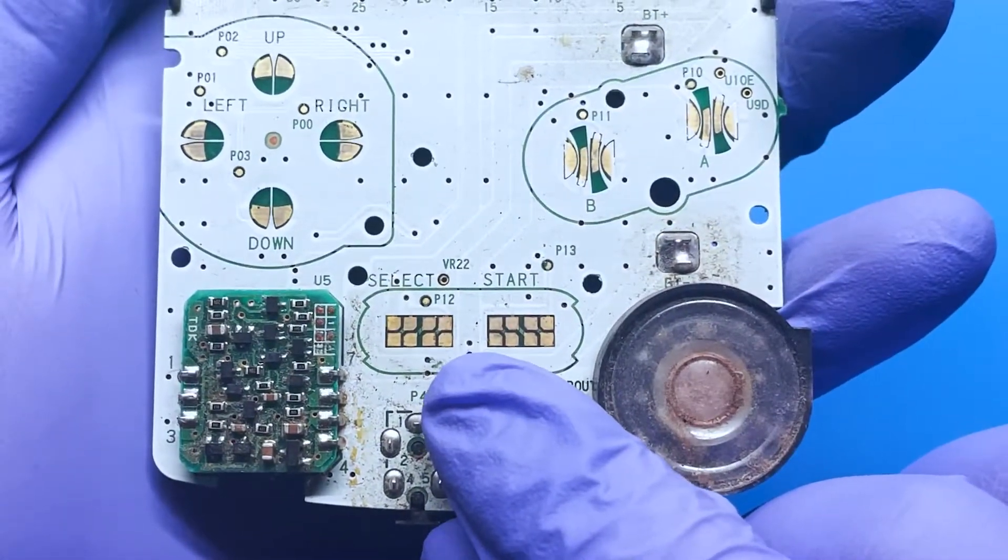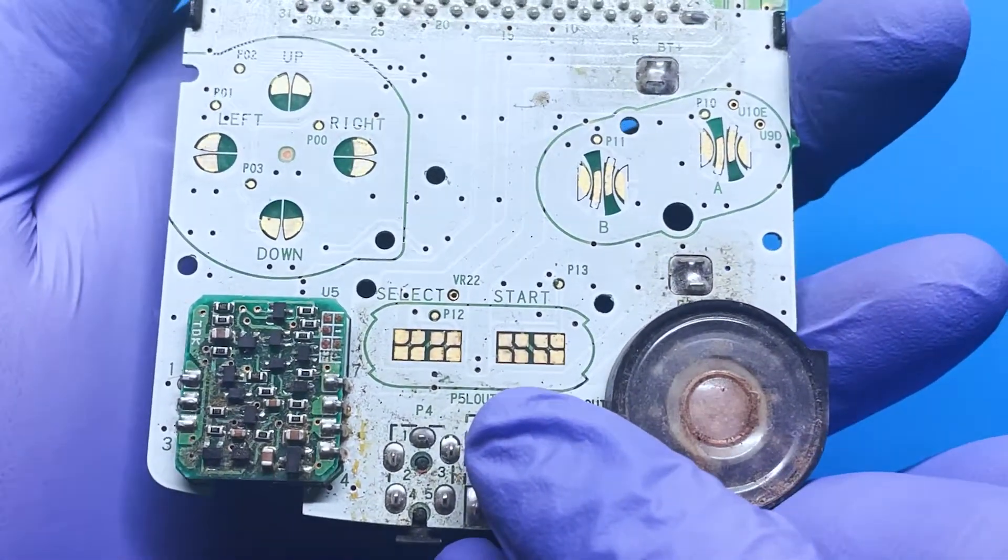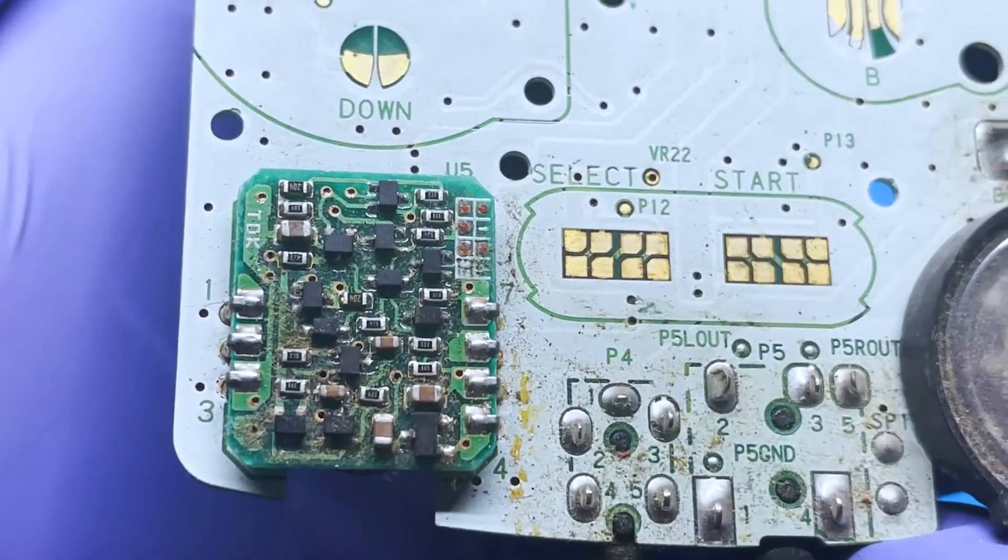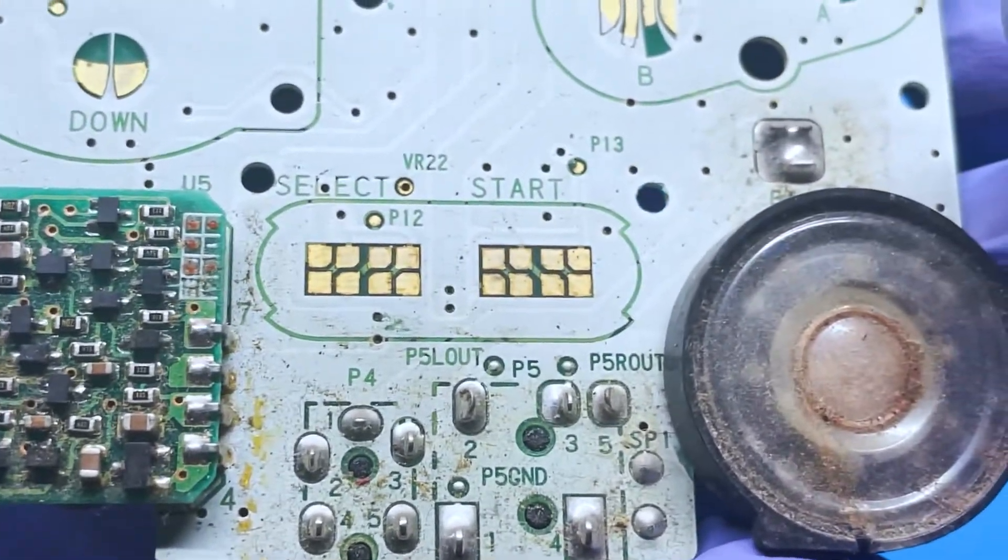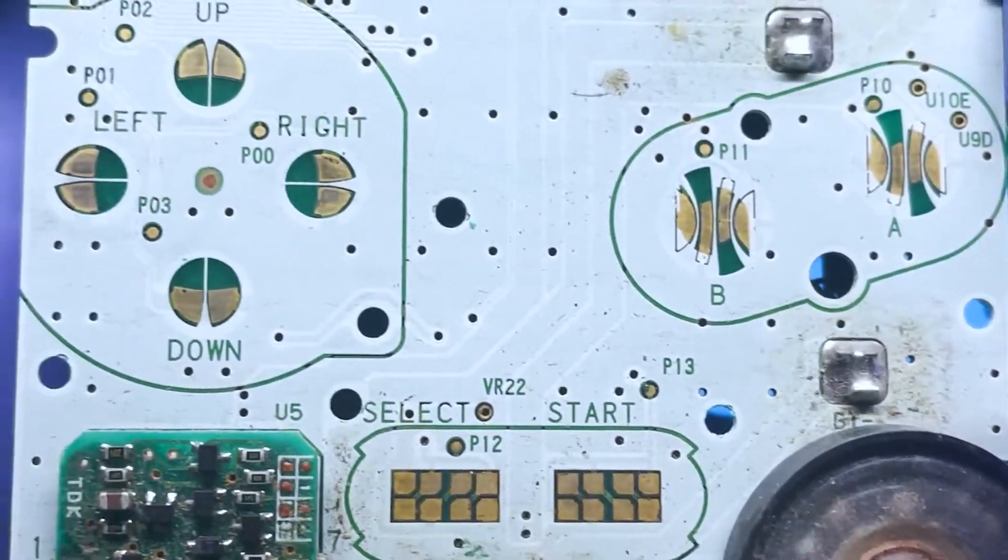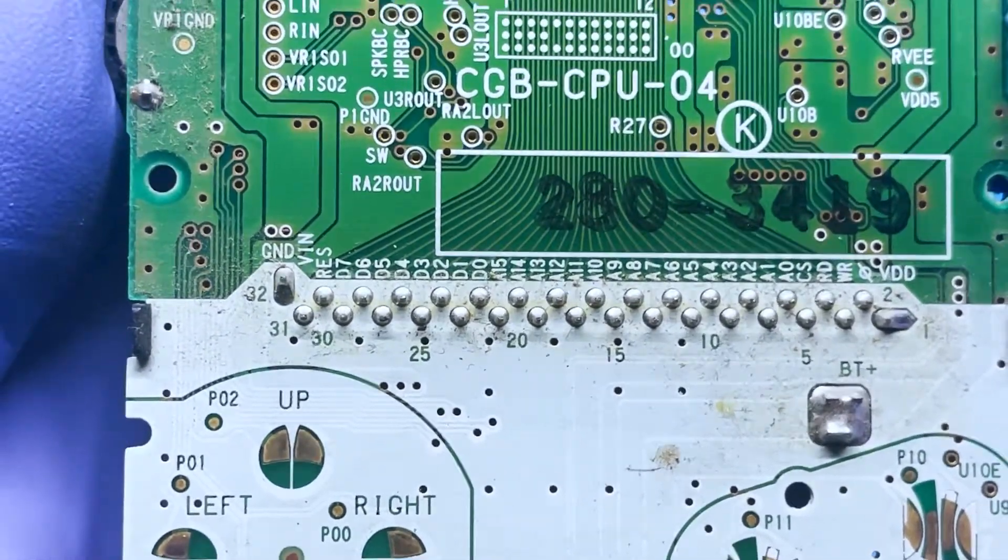I really don't know what's going on with the select and start. They don't look terrible, but we're going to go ahead and clean it. I mean, everything else is really dirty as you can see here. Just looks like there's a lot of dirt in between so we'll go ahead and clean that with a little bit of IPA.